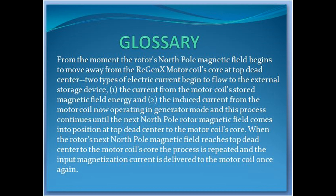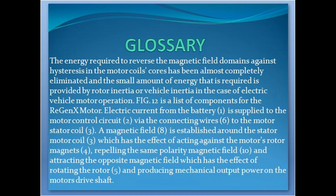From the moment the rotor's north pole magnetic field begins to move away from the Regenx motor coil's core at top dead center, two types of electric current begin to flow to the external storage device: one, the current from the motor coil's stored magnetic field energy, and two, the induced current from the motor coil now operating in generator mode. This process continues until the next north pole rotor magnetic field comes into position at top dead center to the motor coil's core, at which point the input magnetization current is delivered to the motor coil once again. The energy required to reverse the magnetic field domains against hysteresis in the motor coil's cores has been almost completely eliminated, and the small amount of energy that is required is provided by rotor inertia or vehicle inertia in the case of electric vehicle motor operation.